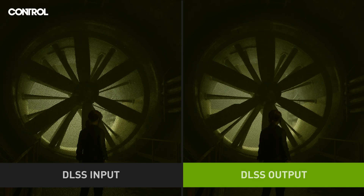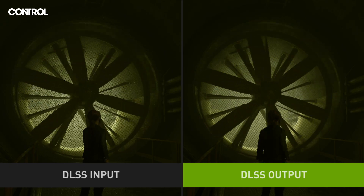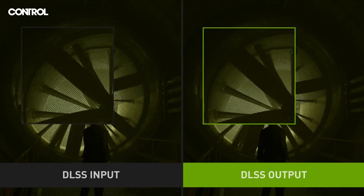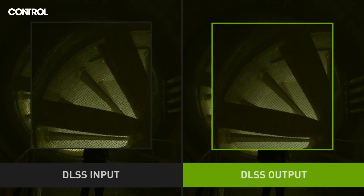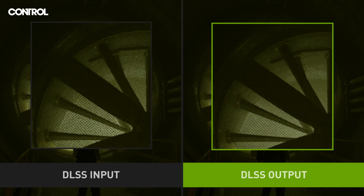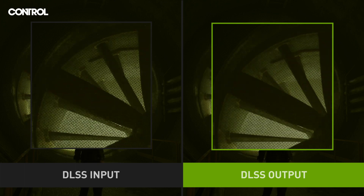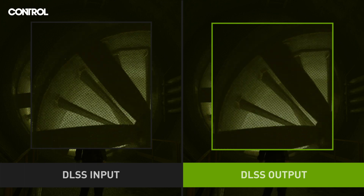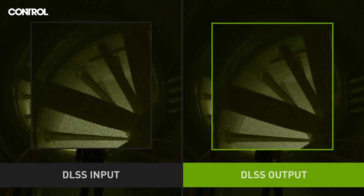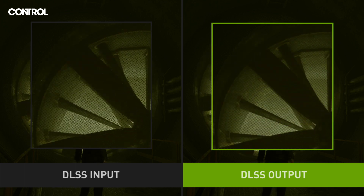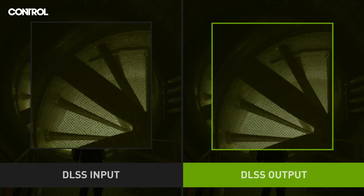DLSS combines AI with geometric motion vectors to make smarter decisions about what information we can reuse from prior frames. Take a look at this example from Control. On the left is the input to DLSS — it's very low resolution and aliased — and on the right is the output from the algorithm with lots of detail and temporal stability.